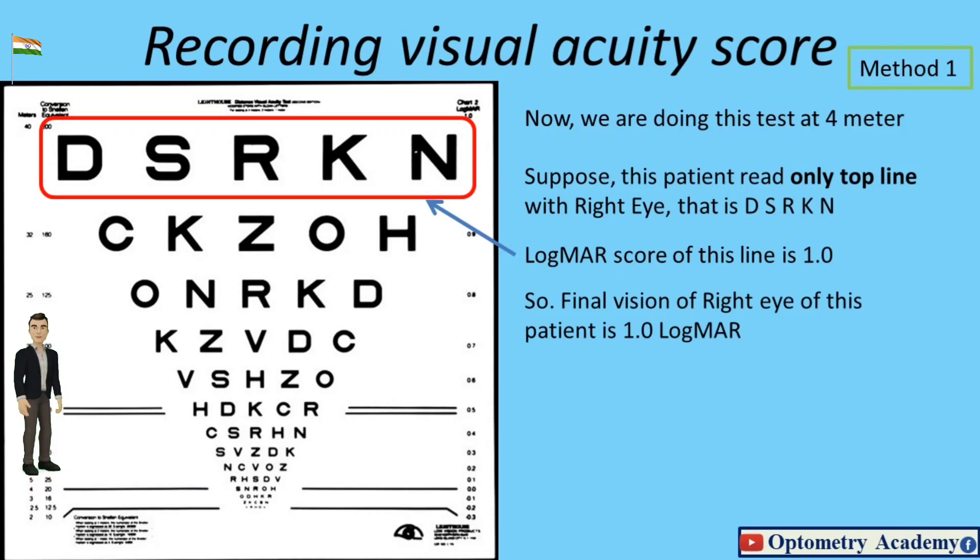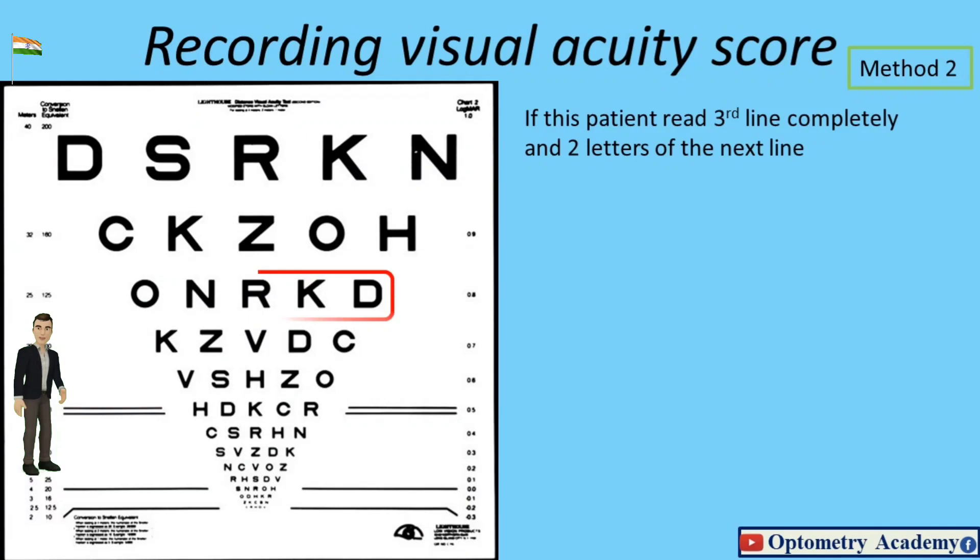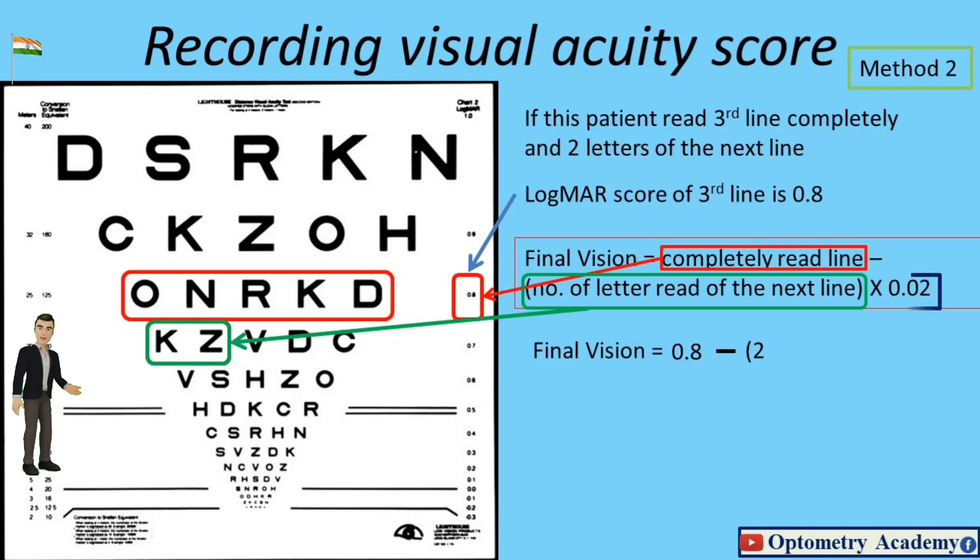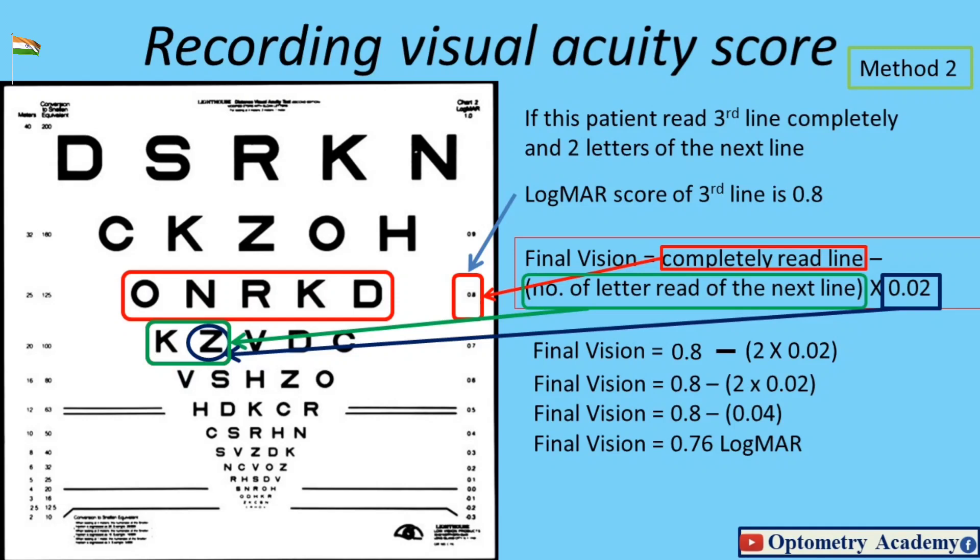Method 2: If this patient read third line completely and two letters of the next line, LogMAR score of third line is 0.8. Final vision equals completely read line minus number of letters read of the next line, multiplied by 0.02. Final vision equals 0.8 minus 2 into 0.02. Final vision equals 0.76 LogMAR.